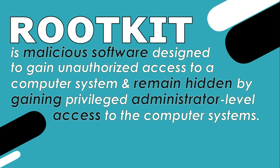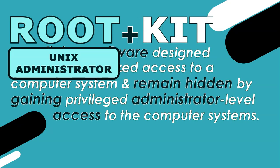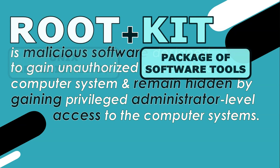The term rootkit is a combination of the words root and kit. Root is the name of the administrator account on Unix-like operating systems, and kit means a package of software tools. So a rootkit is a set of tools that gives someone admin-level access to a system.